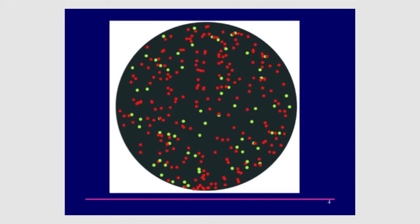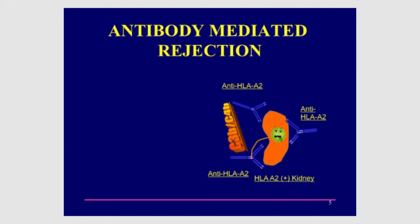A positive cross-match means you should not receive that kidney. For example, if a kidney has antigen A2 and you have antibodies against A2, when complement is added there will be rapid destruction of the kidney. The distinction is important: you may have a great HLA match of five out of six, but still be incompatible because your cross-match is positive. When someone tells you your cross-match is negative, that means you are compatible.